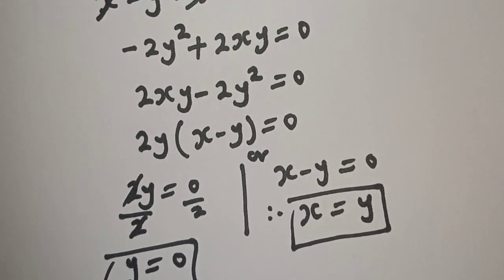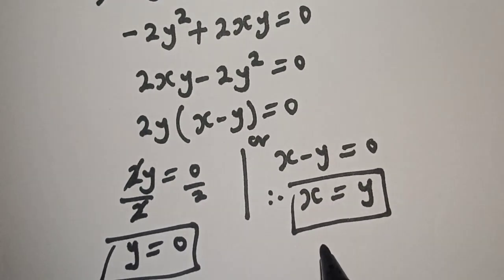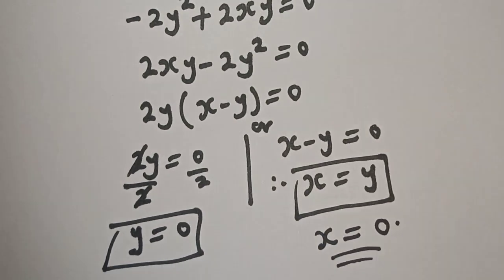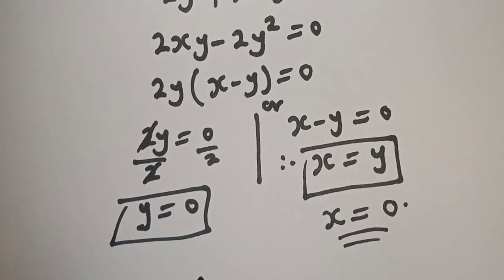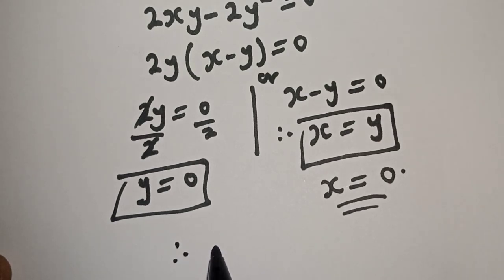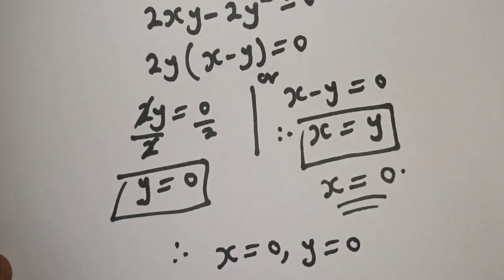Since x is equal to y, and y is equal to 0, it means that x also is equal to 0. Therefore, our final answers are x is equal to 0 and y is equal to 0.